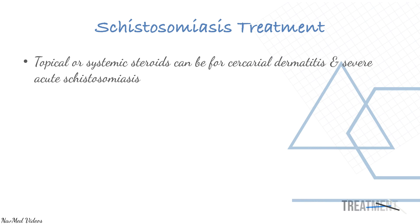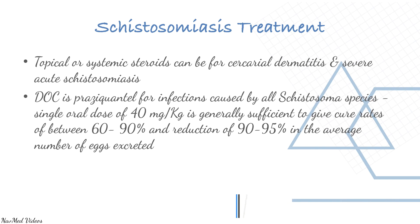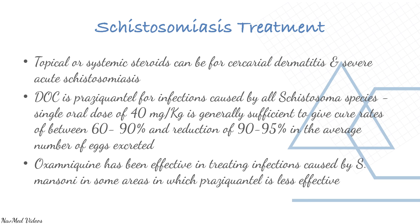Treatment includes topical or systemic steroids for cercarial dermatitis and severe acute schistosomiasis. The drug of choice is praziquantel for infections caused by all schistosoma species. A single oral dose of 40 mg per kg is generally sufficient, giving cure rates between 60 to 90 percent and a 90 to 95 percent reduction in average egg excretion. Oxamniquine has been effective in treating S. mansoni infections in areas where praziquantel is less effective.